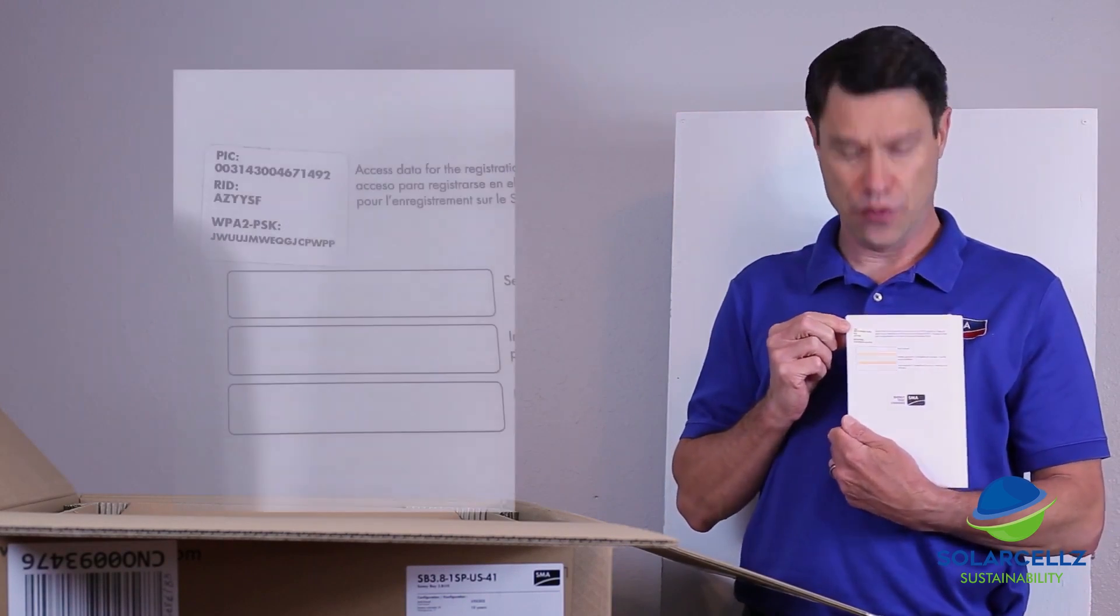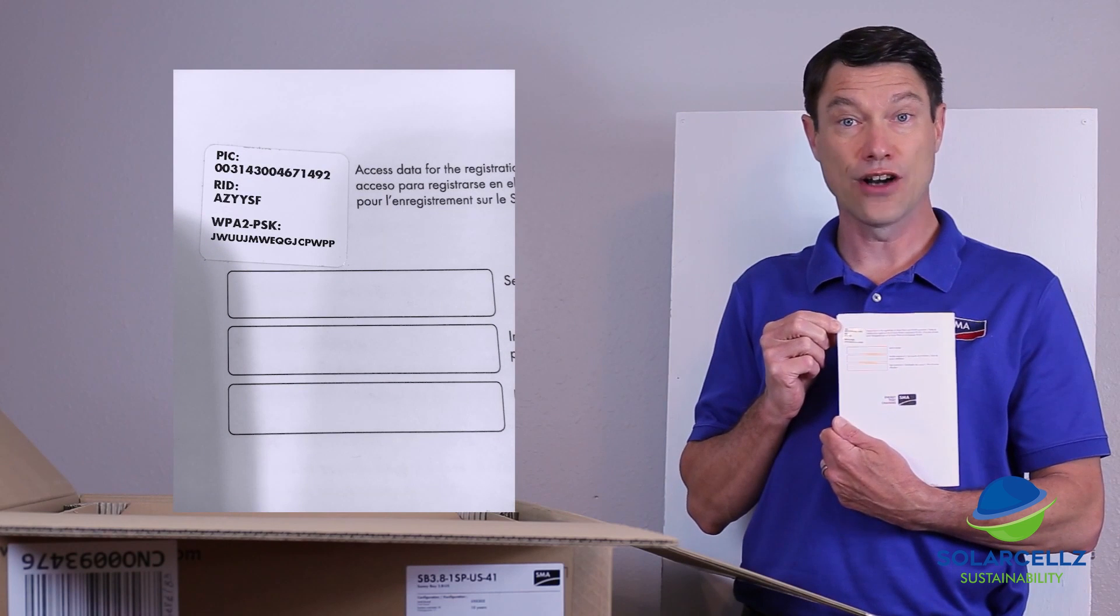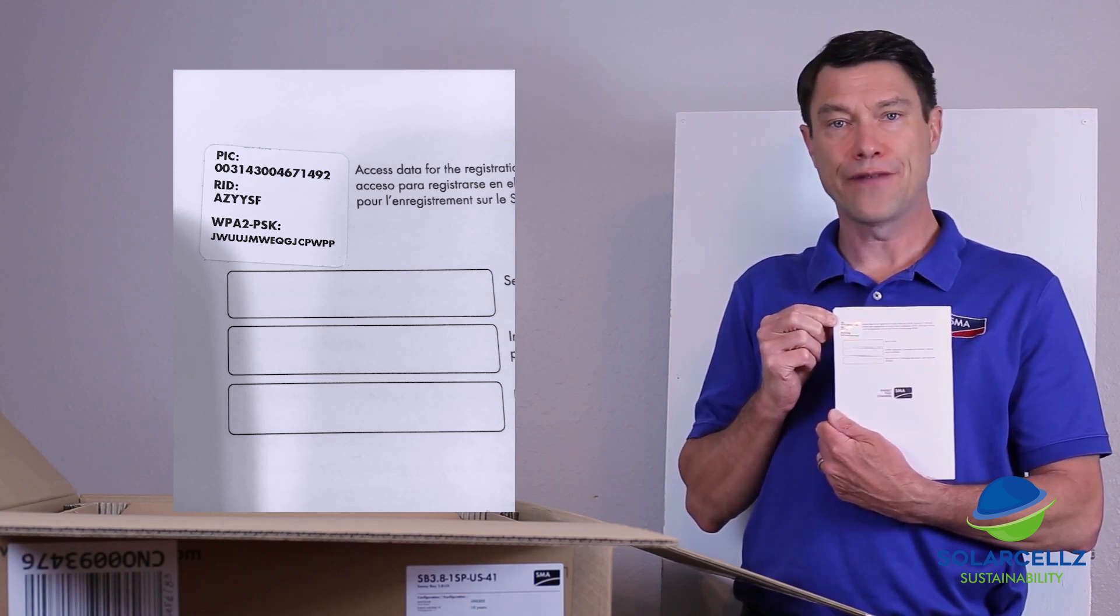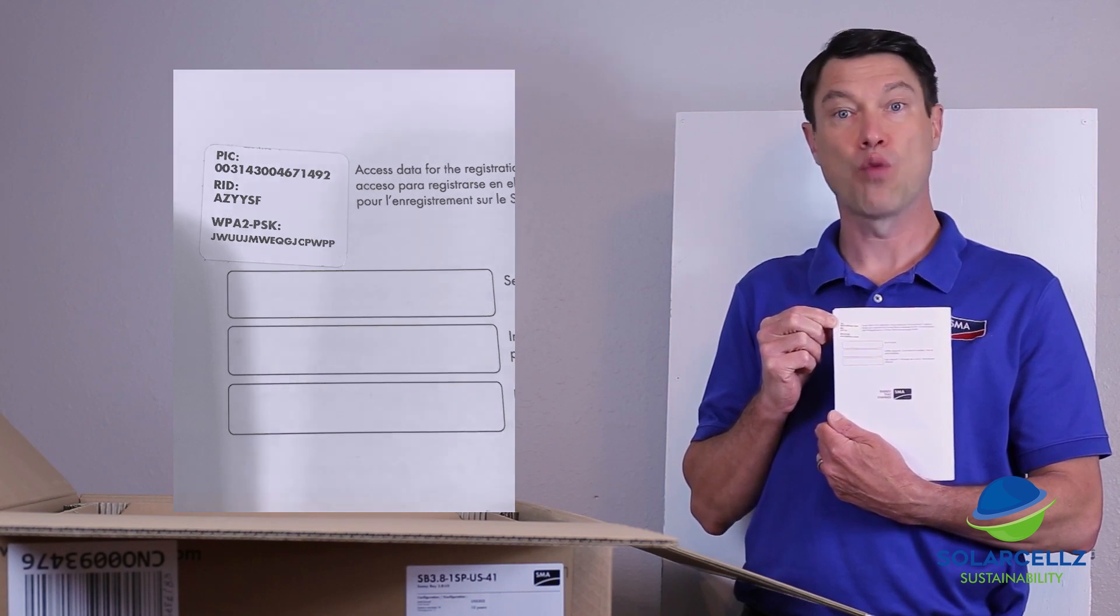Please note that on the back of the installation manual, there is a sticker that has the PIC and RID codes that will be used to register the device on Sunny Portal, as well as the final 16-digit code for the inverter's self-hosted Wi-Fi.